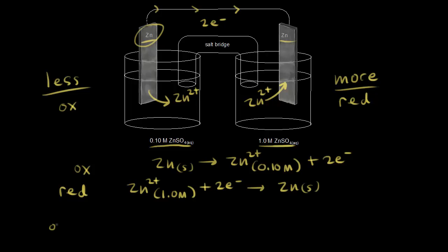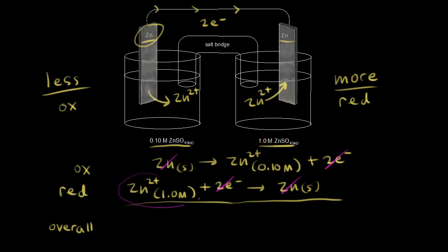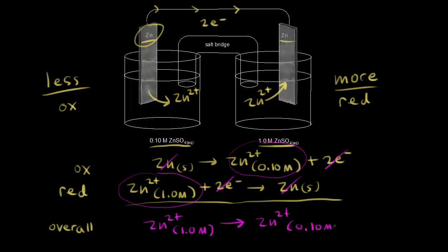What is happening overall? Solid zinc appears on both sides, so we can cancel it out, and we have two electrons on both sides. Overall, we have zinc 2+ at an initial concentration of 1.0 molar going to zinc 2+ at 0.10 molar.